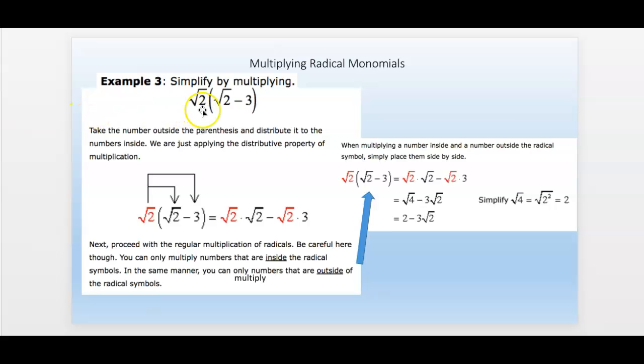We're also going to cover a monomial times a binomial, where you distribute. You take this negative 2 that's in the front times both terms in the binomial.